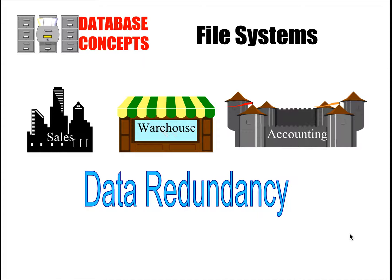Another issue with file systems is that you can have a lot of data redundancy, because you would have different applications that do different things. You may have one for sales, one for warehouse, and one for accounting, but they may all use the same types of characteristics. You would have customer records stored in all three of those different operations. Can you imagine the problem you'd have if the application was deriving and storing all the data by itself? You would have what is called data redundancy — customer information stored in three different places, potentially incorrect at any given time. So with file systems by themselves, there is data redundancy and data dependence issues.